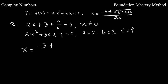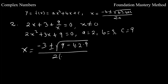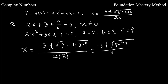We identify a = 2, b = 3, and c = 9. Applying the quadratic formula: x = (−b ± √(b²−4ac)) / 2a gives us −3 plus or minus the square root of 9 minus 4 times 2 times 9, all over 2 times 2. Simplifying gives negative 3 plus or minus the square root of negative 63, over 4.